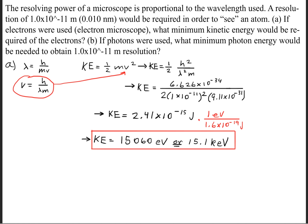So once we convert, we'll get that the kinetic energy is equal to 15,060 electron volts, or you can write that as 15.1 kilo electron volts.